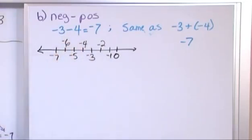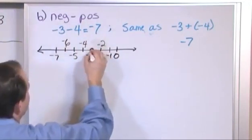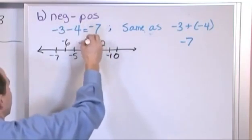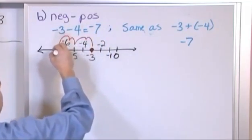And let's say that I'm starting off at negative 3, because that's how my problem is. I start here and I have to take away 4 from that. So I go this way: 1, 2, 3, 4, negative 7.